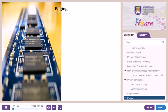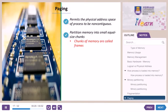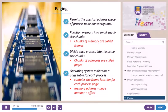Paging is one of the solutions for external fragmentation. This memory management scheme permits the physical address space of a process to be non-contiguous. Each process has its own page table; each page table entry contains the frame number of the corresponding page in main memory. Page and frame size is defined by hardware, between 512 bytes and 16 megabytes per page. Memory is partitioned into small equal-size chunks known as frames. Each process is divided into same-size chunks called pages. The OS maintains a page table for each process, and the page table contains the frame location for each process page, whereby the memory address is the page number plus offset.